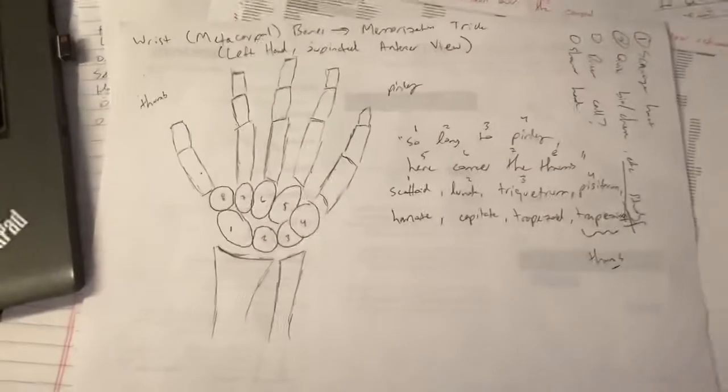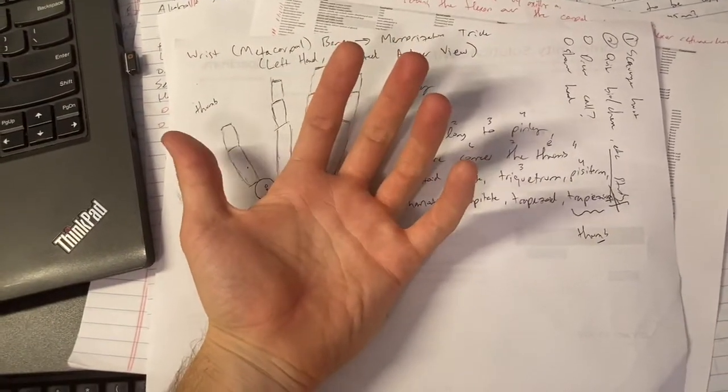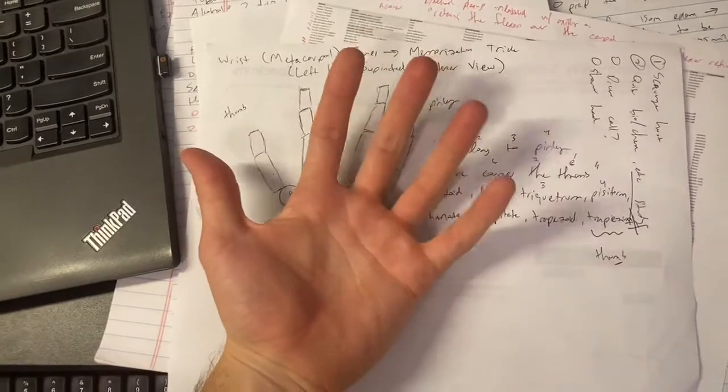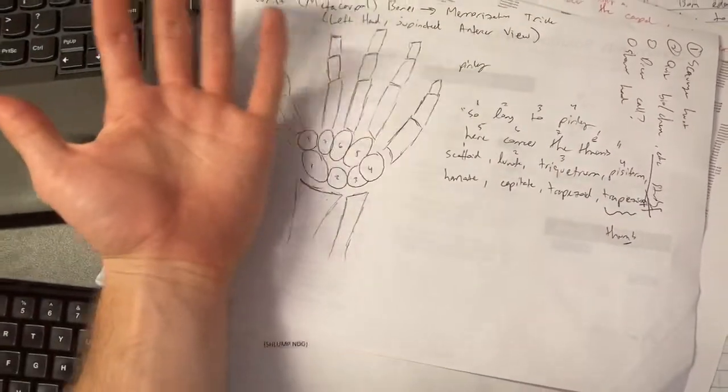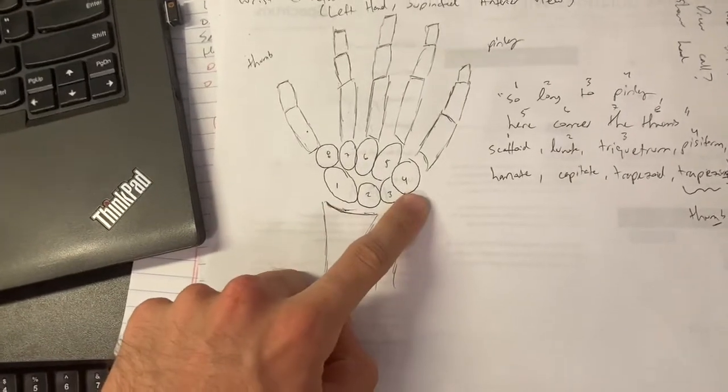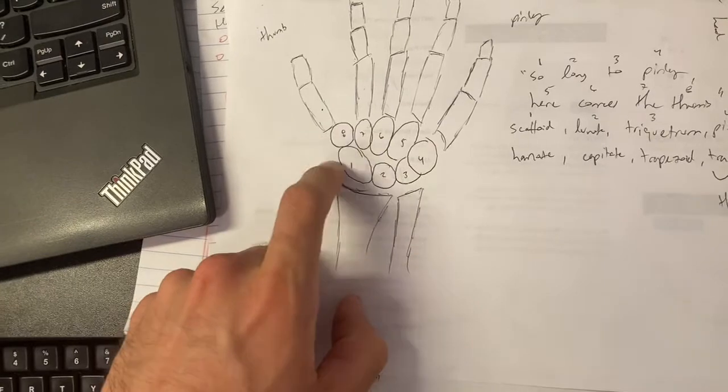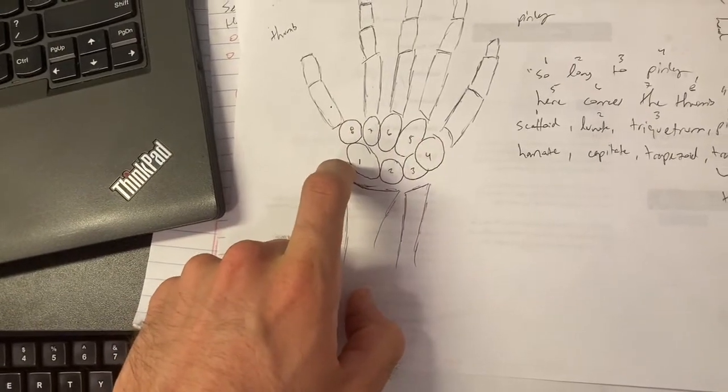I've sketched out a picture of a supinated left hand and we're looking at the anterior, the front view of it. This is going to map onto that. I numbered these bones just like this. So we've got one, two, three, four, five, six, seven, eight. Basically you go around just like that.